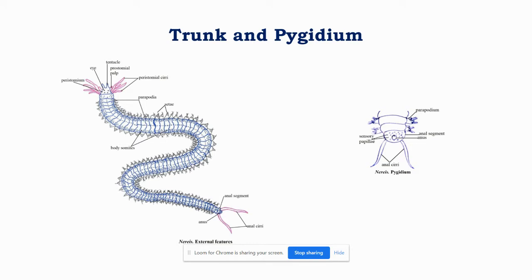The trunk and pygidium. All the segments of the body except the last segment are known as the trunk and the number may range from 80 to 200. Each segment bears a pair of parapodia on the lateral sides. All the segments are alike externally, and since the body of the worm is tapering, the size of the segments slowly decreases towards the posterior end. The pygidium or the anal segment is slightly convex in shape and bears the anus on the ventral side. It differs from the trunk segments in that it does not have any parapodium. Instead, a pair of anal cirri are present. Sensory papillae are also present on the anal segment.